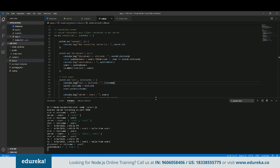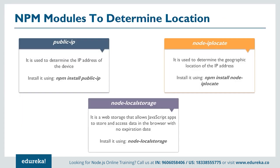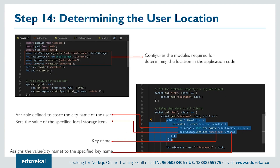Now I want to track the location of the user. To determine the user's location, we get the geographic location of their IP address. We'll use two npm modules: public-ip to determine the IP address of the device, and ip-locate to determine the geographic location of that IP. Then node-local-storage allows JavaScript apps to store and access data in the browser with no expiration date.